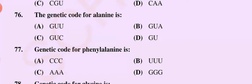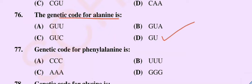Bismillahirrahmanirrahim, Assalamu Alaikum. Dear students, today we will discuss from question number 76. The genetic code for alanine is: option A, GUU; option B, GUA; option C, GUC; option D, GU. The correct option is option D. GU is the genetic code for alanine.